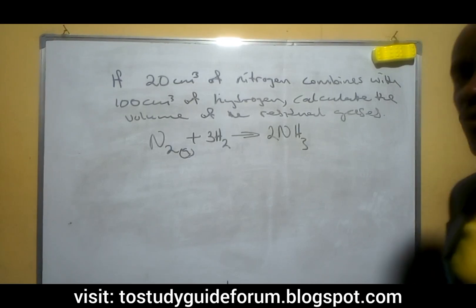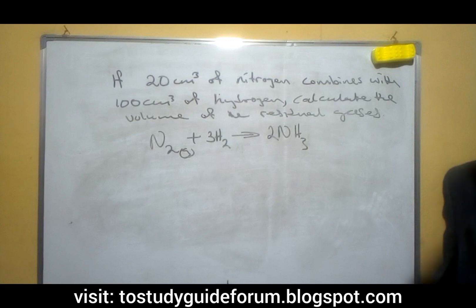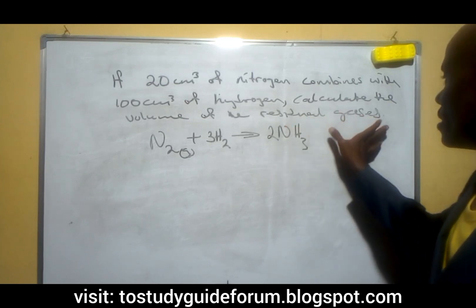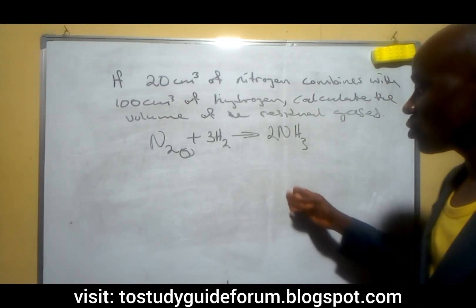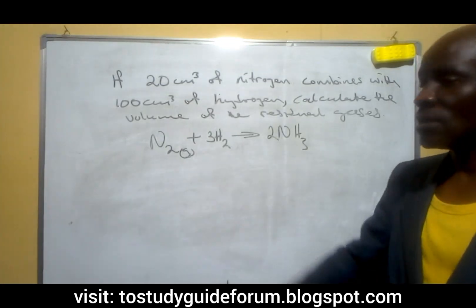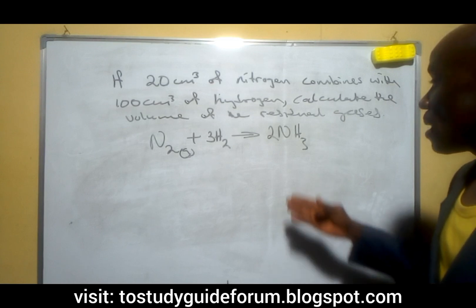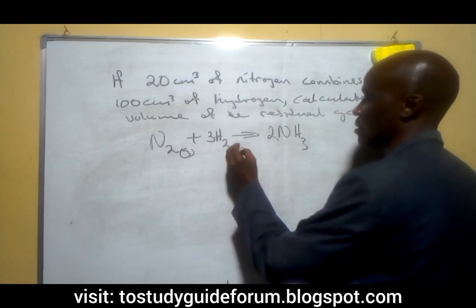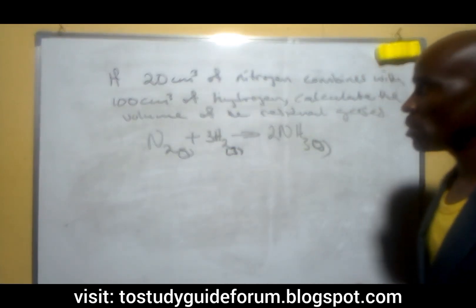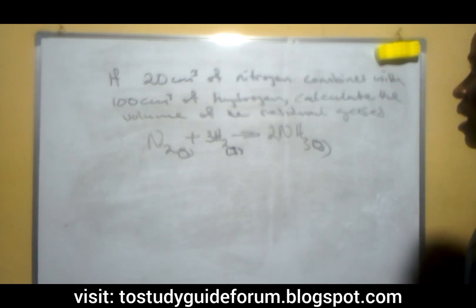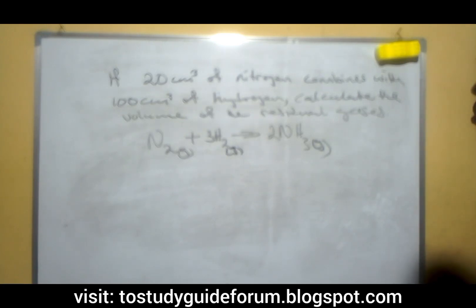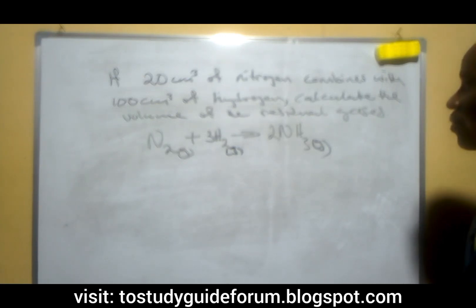Hello everyone, thank you for another exciting moment. In this class we're going to look at a question on the board that has to do with calculating and finding the residual gases in a chemical reaction. When some of the reactants are in excess, they tend to have a residual, especially when they are all gases. The question says that if 20 cm³ of nitrogen combines with 100 cm³ of hydrogen, calculate the volume of the residual gases.